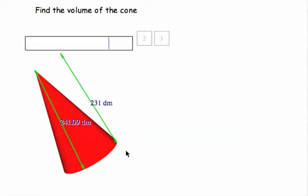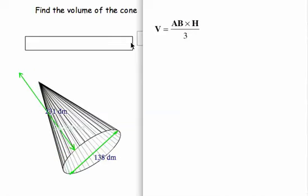So the volume of a cone would be 1 third of the volume of a cylinder having the same height and diameter. So the volume of a cone is area of the base times height divided by 3.